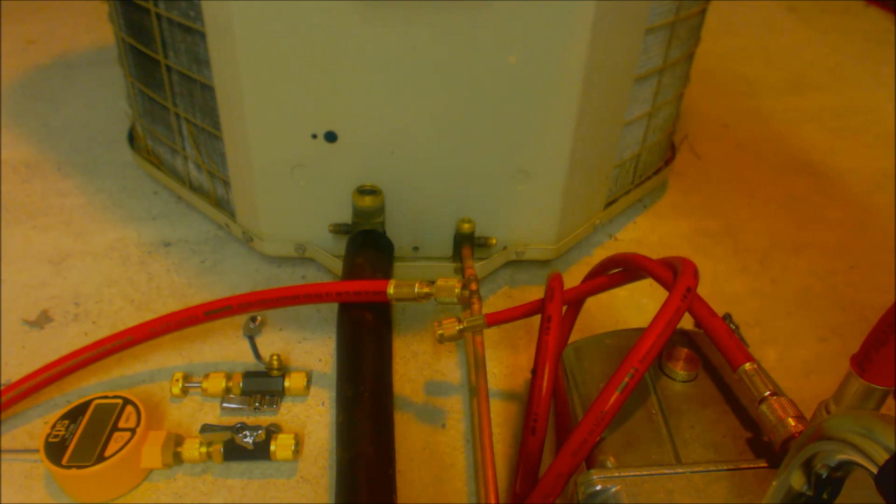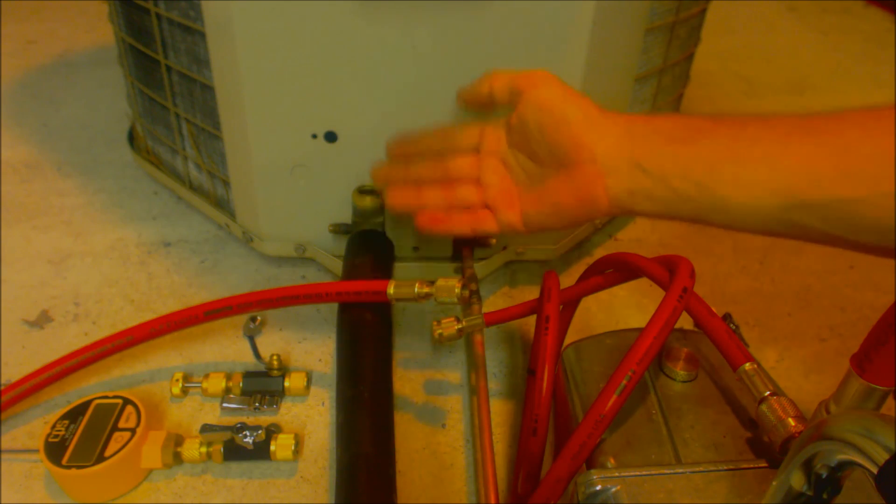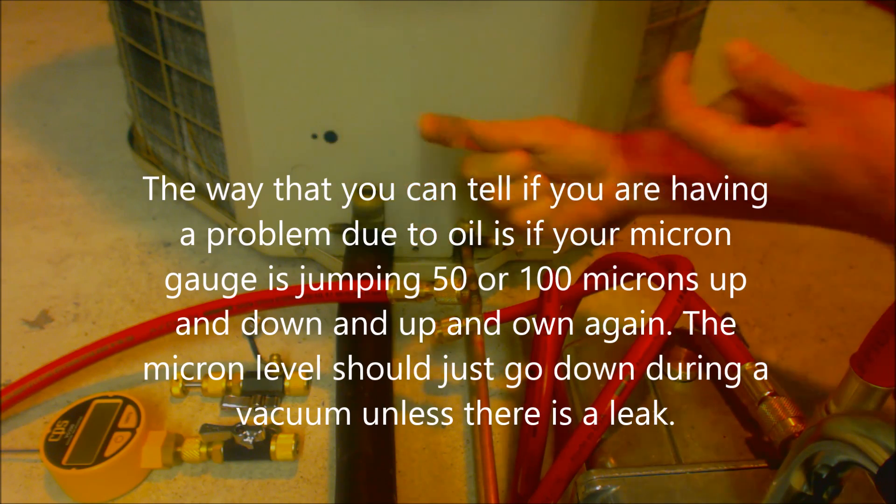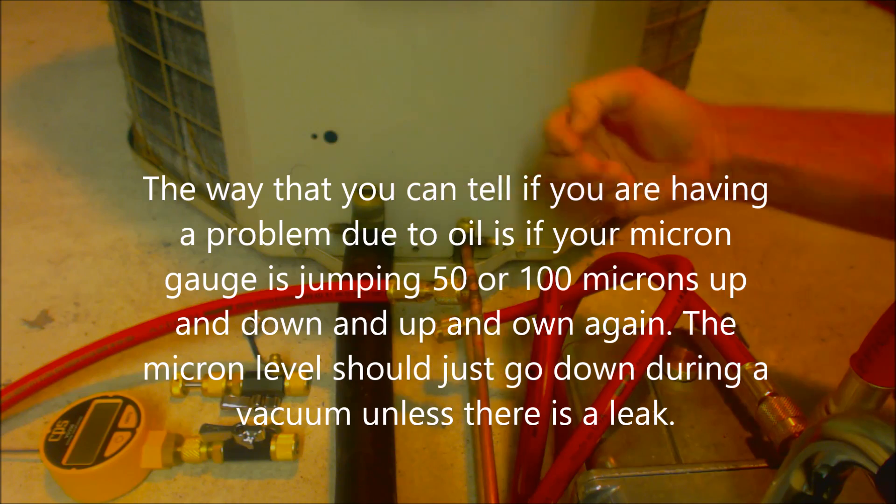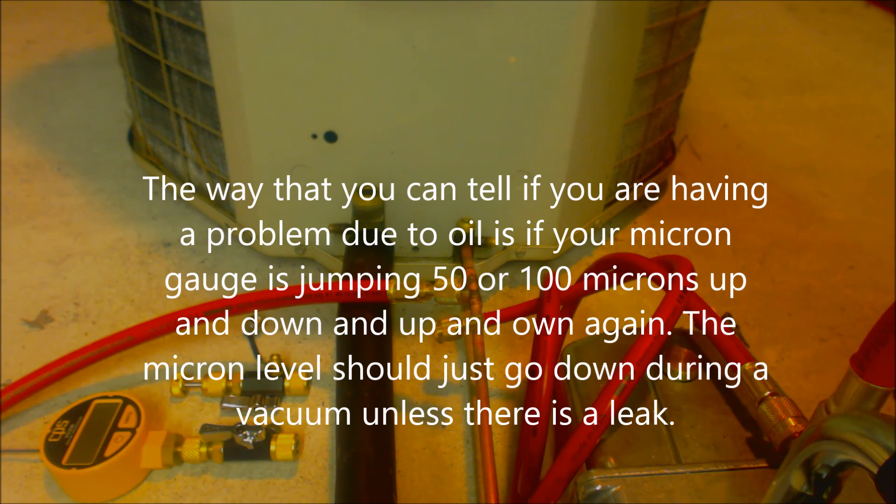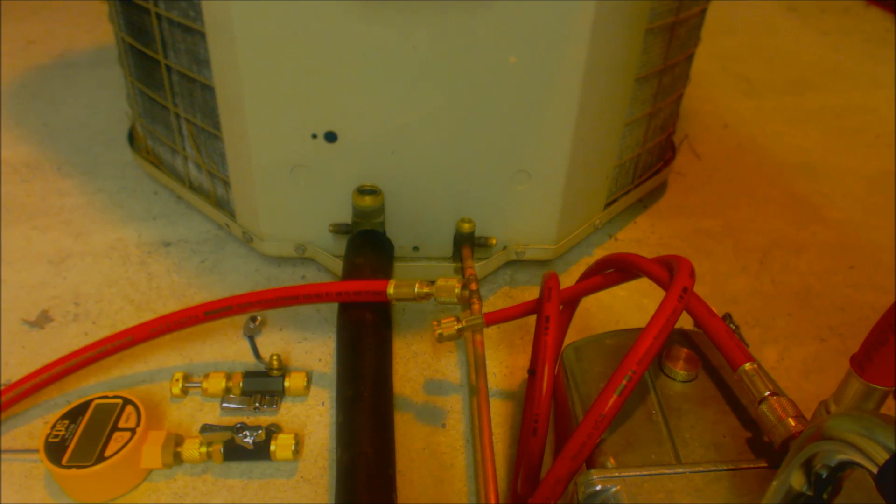You vacuum the system after you get done pressure testing the unit and after you get done doing an oil blowout procedure if there is a part of the system that's existing, like the line set or the evaporator coil, if it did have oil in it. The problem is you might have two globs of oil that will be moving around and there will be air stuck between it. You want to make sure that you blow all that oil onto the inner lining of the tubes and the evaporator coil and in the line set so that you can actually pull a vacuum through this.